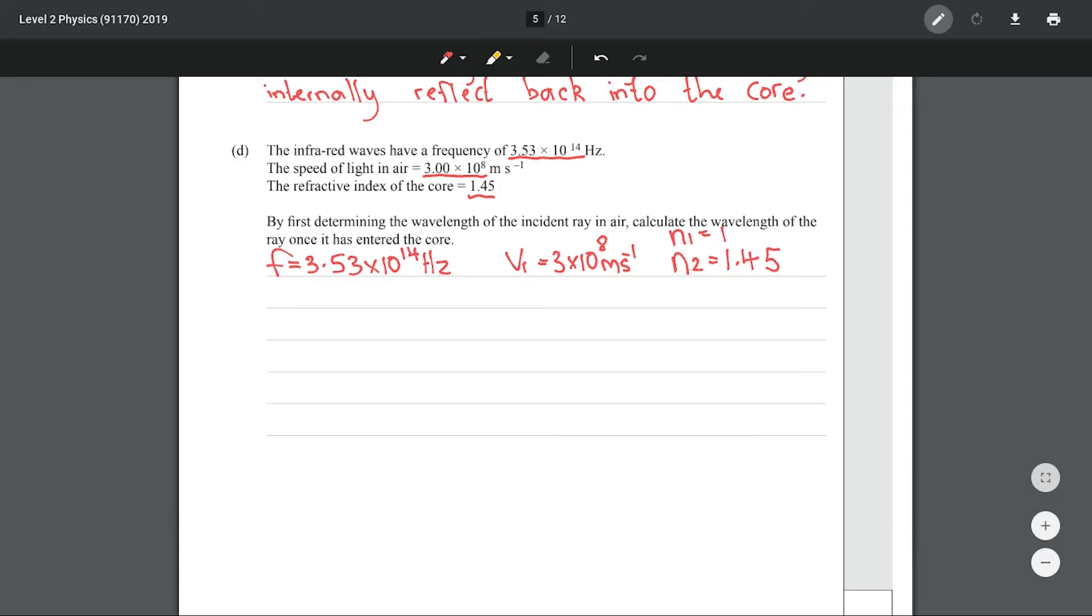First let's find lambda 1. We can use the relationship v1 equals f lambda 1. Rearranging that for lambda 1, putting in our numbers gives me 8.498. Since the question has given us three significant figures across the board, we'll round this to three significant figures, which gives us 8.50 times 10 to the negative 7.